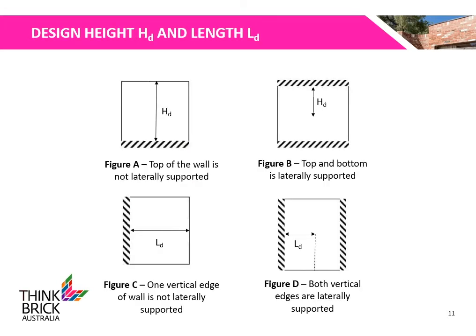Here is a diagram of the different configurations of supports for walls. The design height and design length shall be chosen appropriately for the following cases. If the wall is supported on only one side, as shown in figures A and C, the full height or length of the wall shall be used. If the wall is supported on both sides, as shown in figures B and D, half the height or length of the wall shall be used.